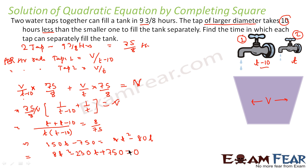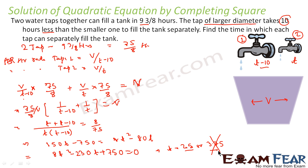This is the final equation. Solving 8t² − 230t + 750 = 0 gives two values: t = 25 or t = 3.75. The trick here is that if t = 3.75, then t minus 10 equals minus 6.25, which is a negative time — not possible. So we reject t = 3.75, and the only valid value is t = 25.